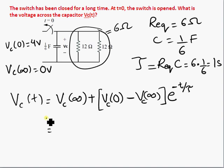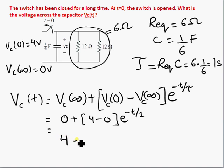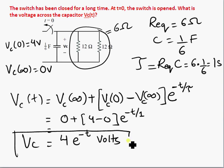So let's plug that value in. So we have 0 plus 4 minus 0, e to the power minus t over tau, which is 1. So we have 4 e to the power minus t volts as being voltage across the capacitor. So this is the voltage across the capacitor.